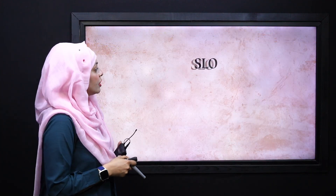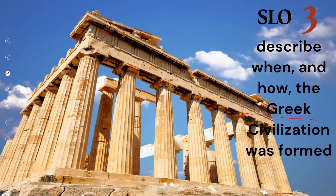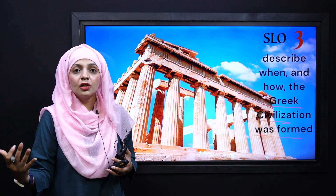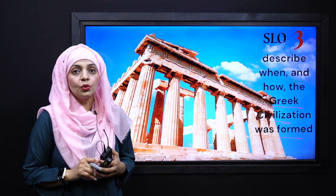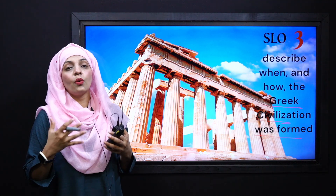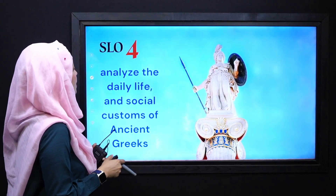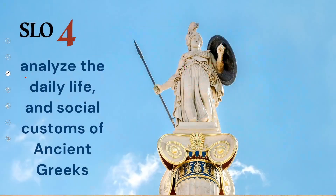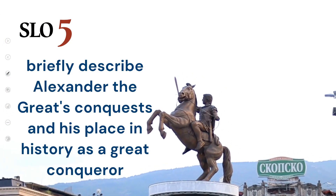Further, we will discuss when and how Greek civilization was formed — when it was established, how it was formed, where it began, which are the places where Greek civilization existed, and what we call those regions in the modern era. We will be discussing that. And in the next student learning outcome, you will be able to analyze the daily life and social customs of ancient Greeks — the many things that the ancient Greeks invented.